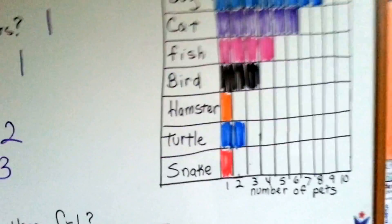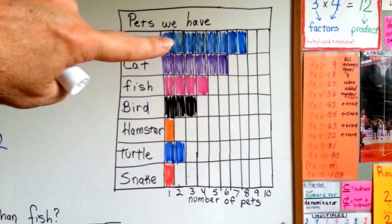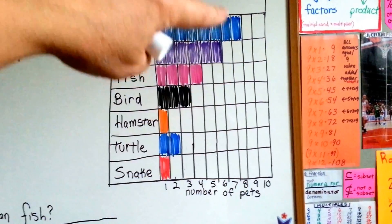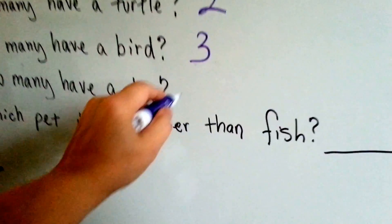How many have a dog? There's a lot of dog pets in the class. Go to the end of the bar. Go down and see that eight boxes are filled. Eight students have a dog for a pet.